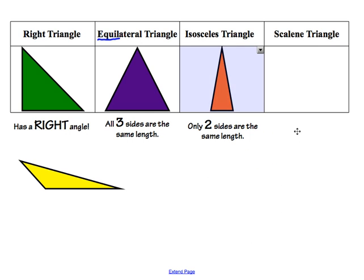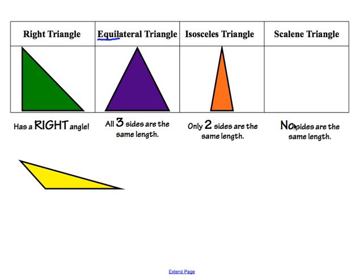Lastly is our scalene triangle. A scalene triangle has no sides the same length, and that would be our yellow triangle — each side is a different length.